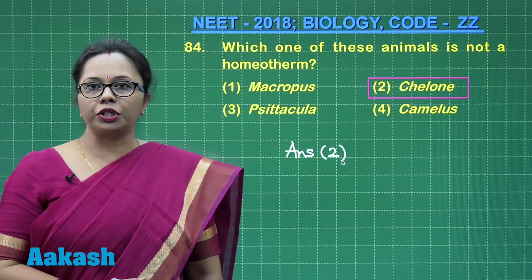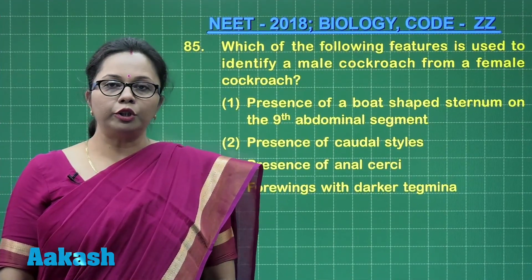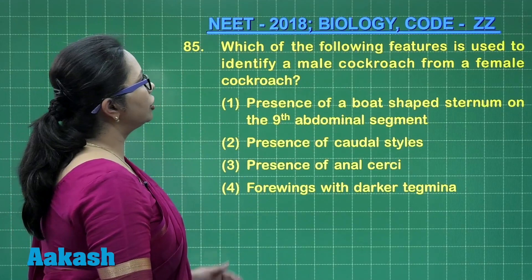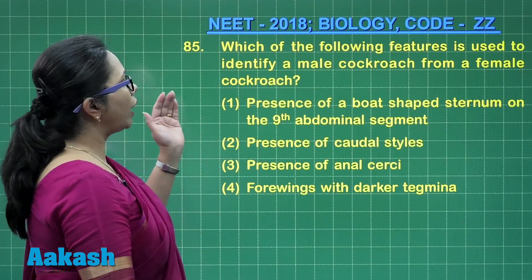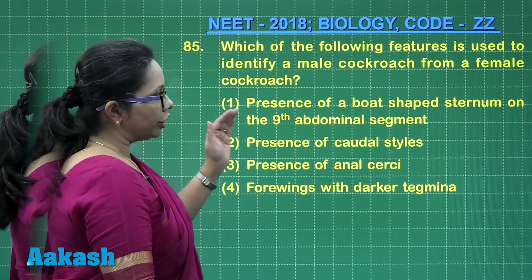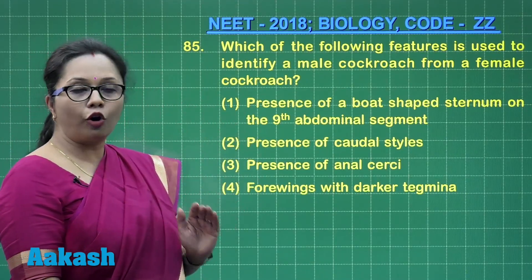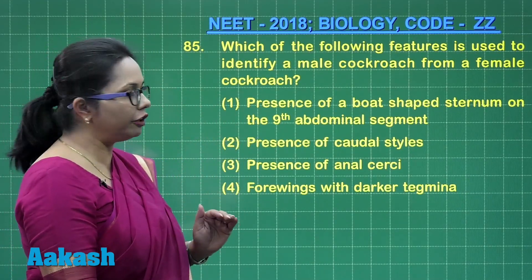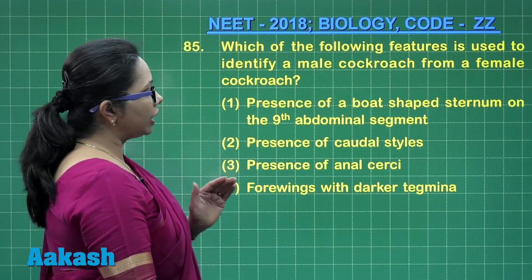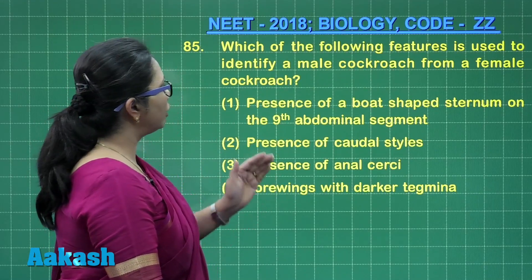So the odd one out is Chelone, the turtle, making the answer option two. Moving to question 85: which of the following features is used to identify a male cockroach from a female? There is very distinct sexual dimorphism between the male and female cockroach.